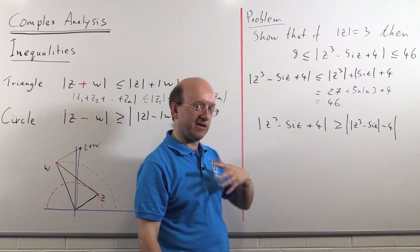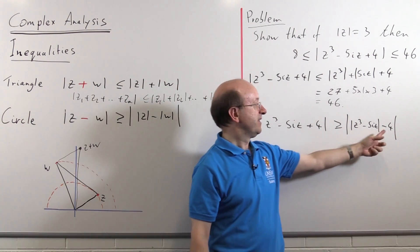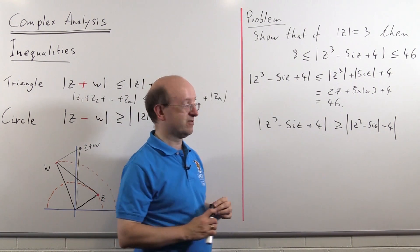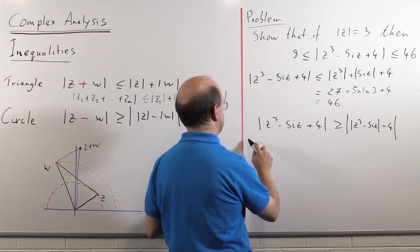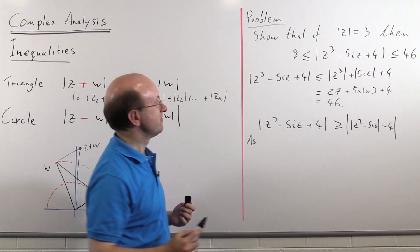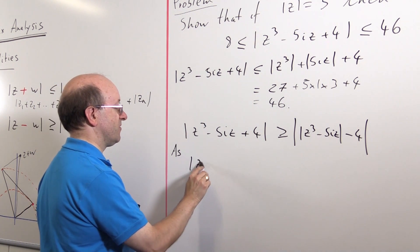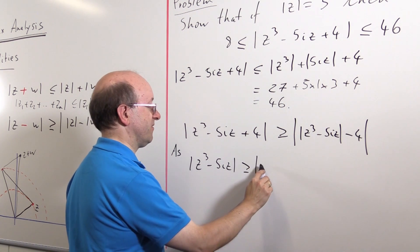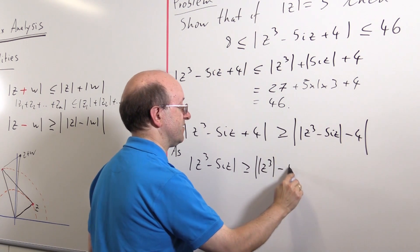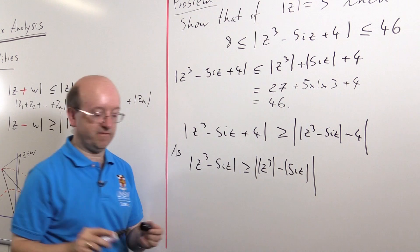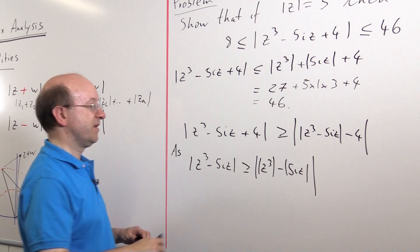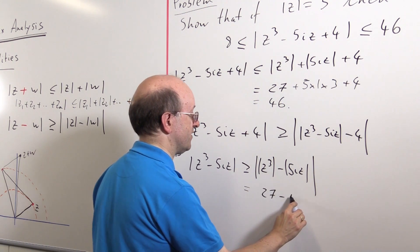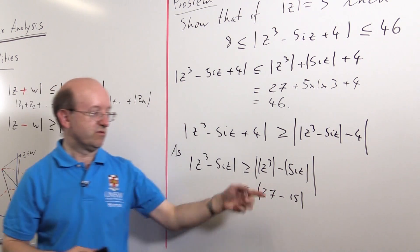So now I want to make more rigorous the argument I just said verbally here. Can I prove that that term is big enough so that these outer absolute value signs can be thrown away? You can't just throw away absolute value signs, not when you're dealing with complex numbers. So, let's put some English around this. You should always at least write some words as the absolute value of z cubed minus 5i z is bigger than or equal to the absolute value of z cubed minus the absolute value of 5i z. That's just a circle inequality used for two terms, which we know is 27 minus 15 in absolute value, which of course is 12.